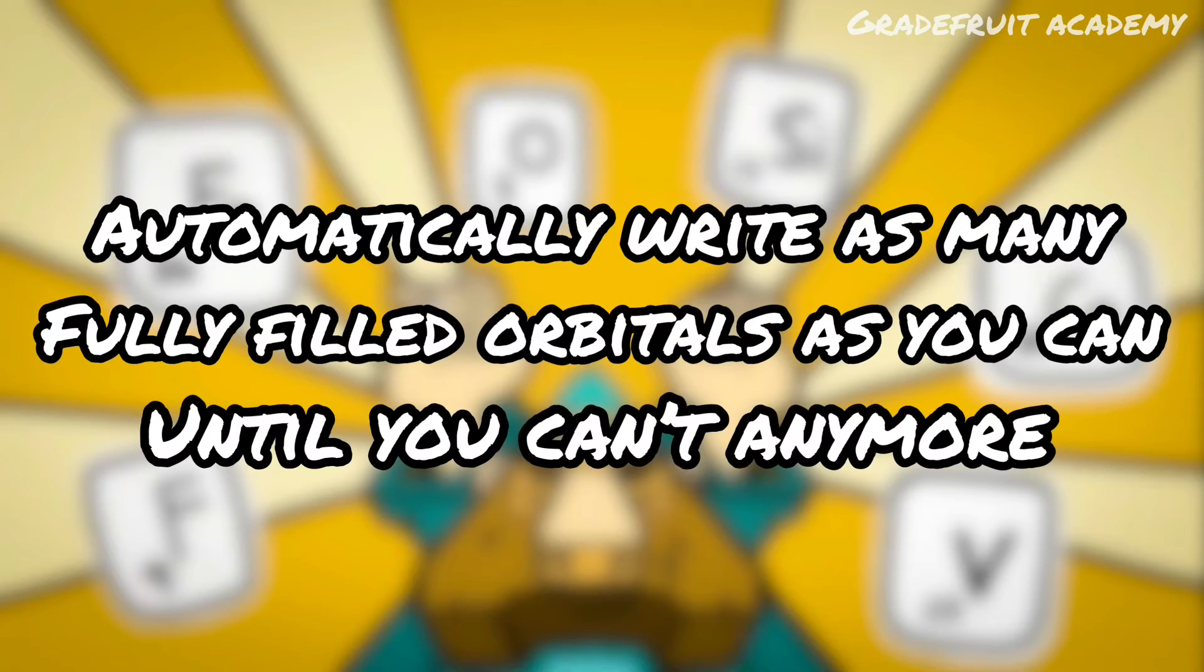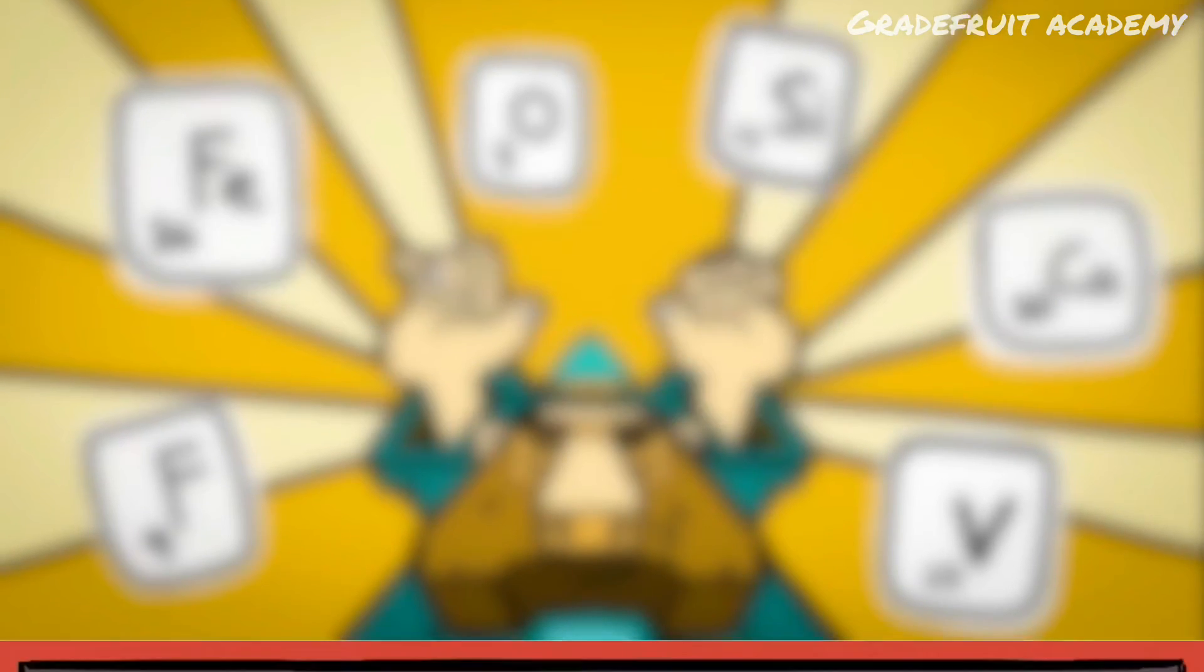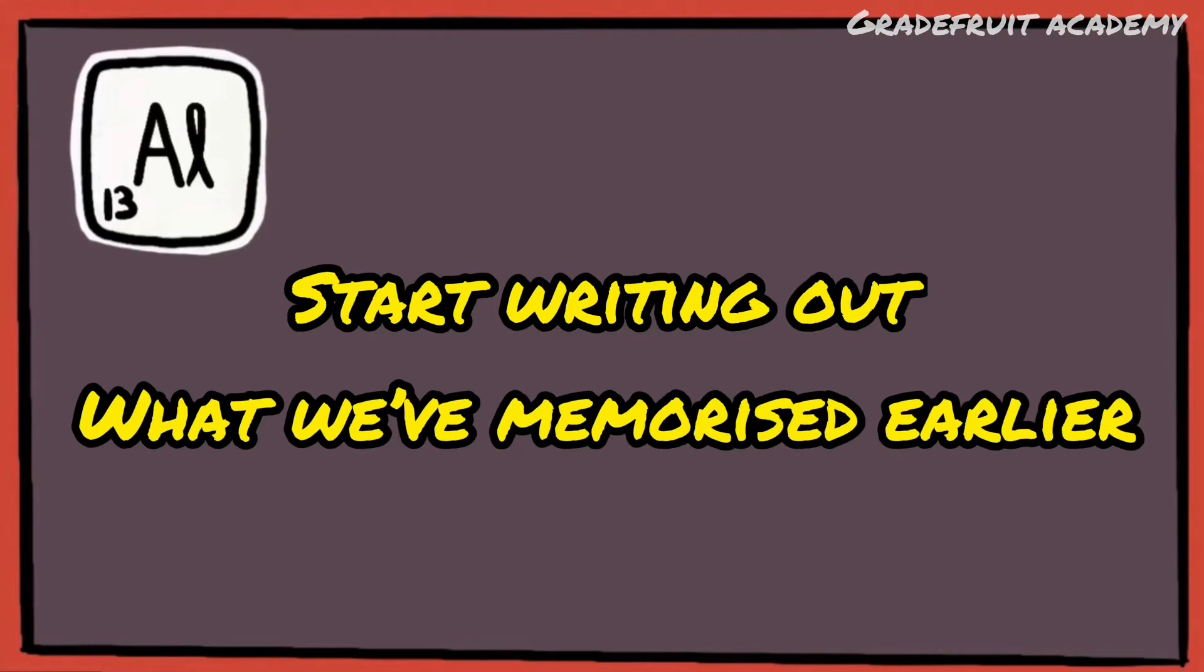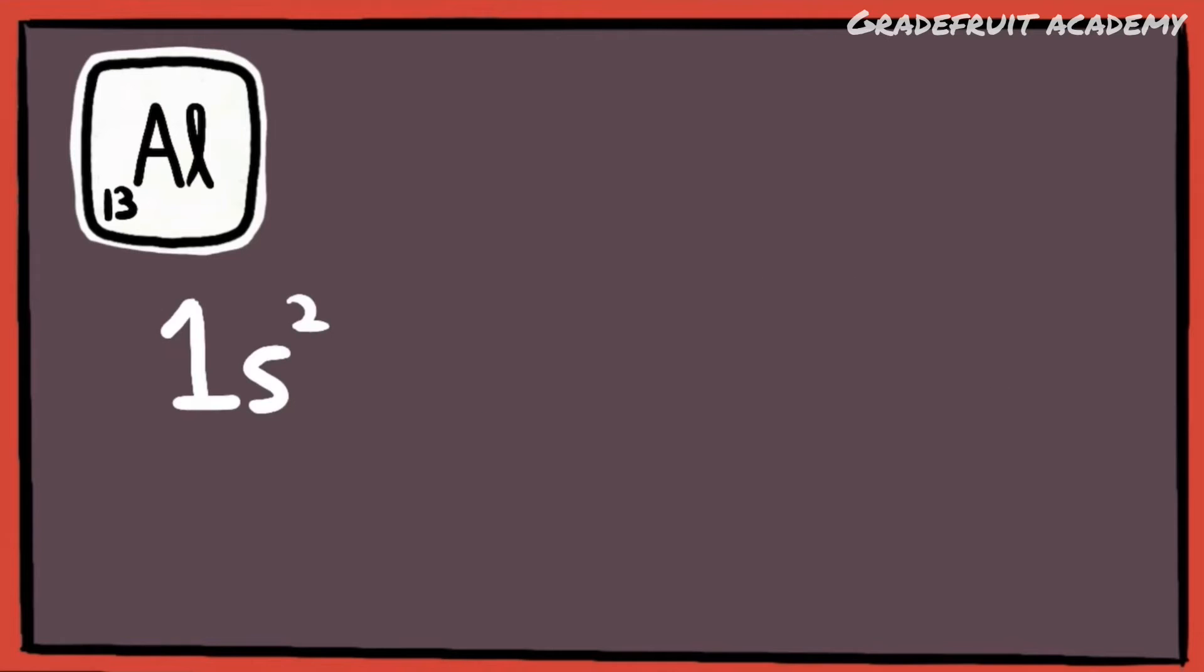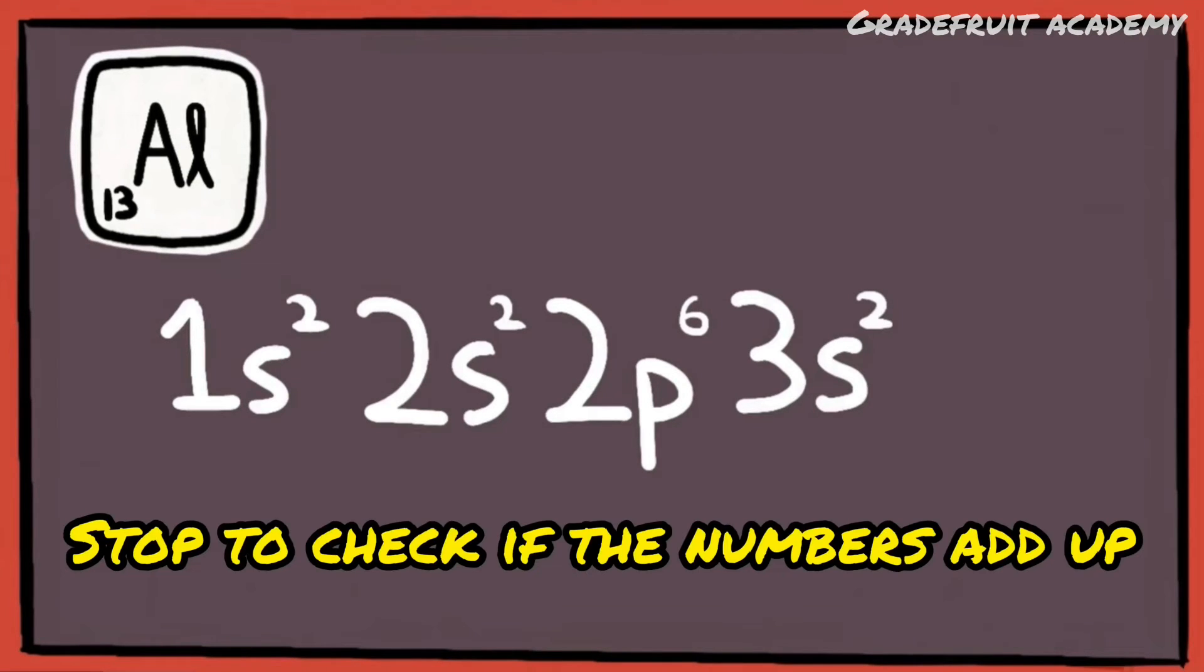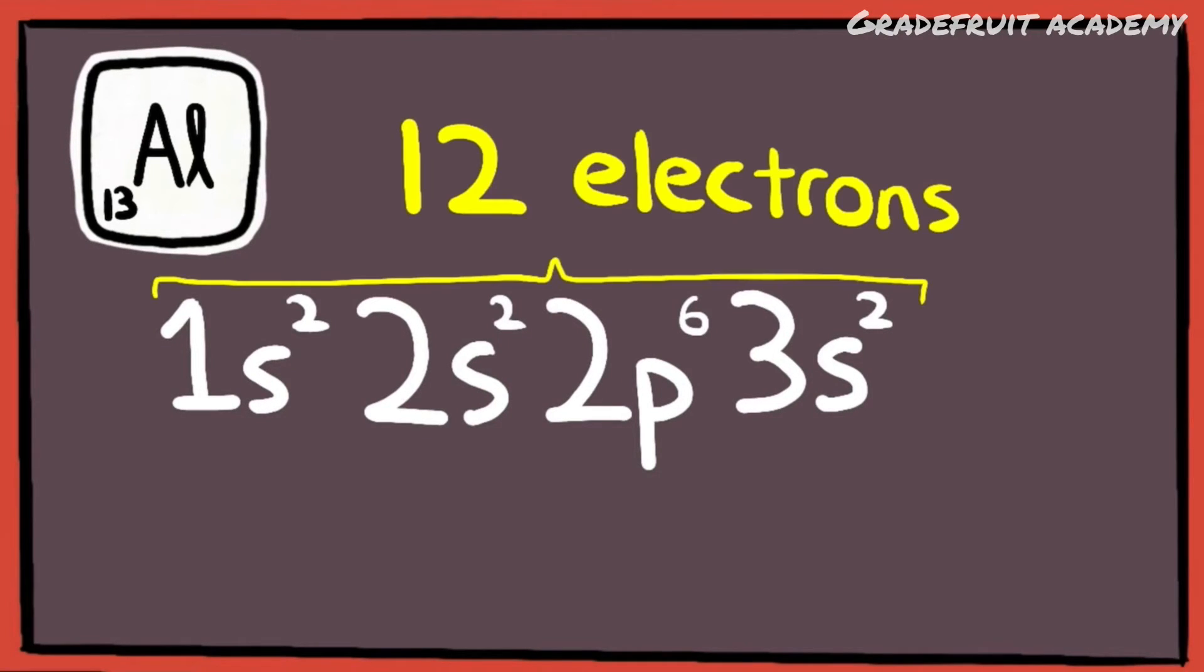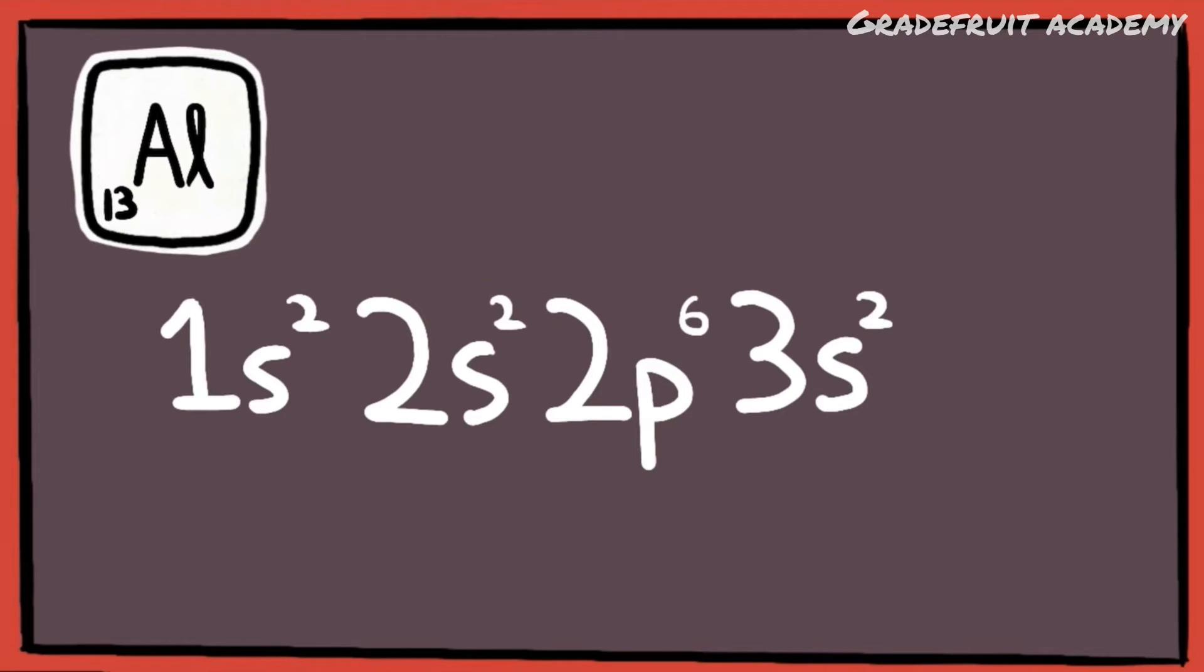So if it's an aluminium atom with 13 electrons, just start writing out what we've memorized earlier: 1s², 2s², 2p⁶, 3s². Then stop to check if the number of electrons add up to 13. In this case, we've only written up till 12 electrons, so we just need one more. And we can complete the electronic configuration by adding on 3p¹.